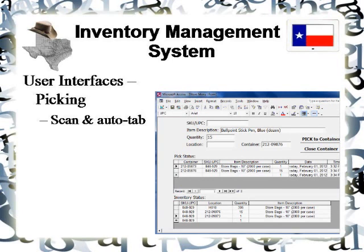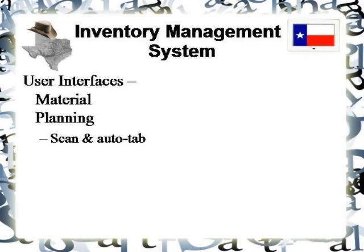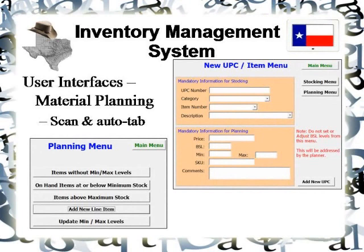I've also added two subforms — one for pick status and one for inventory status — intended to inform the user of how the pick is proceeding and what is happening to the inventory. These are information-only; users don't update these subforms directly. And last but not least are the planner menus. There's an alert process that comes up every time somebody scans a UPC that's not in the database, giving them an opportunity to enter it for the first time with vendor information and UPC number description. The planner can also set stock levels — the basic stock level, the minimum to kick off a reorder, and the maximum to sell off excess inventory.